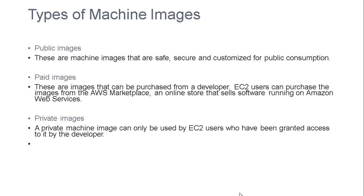Paid images are images that can be purchased from the developer. EC2 users can purchase images from the AWS Marketplace, an online store that sells software running on Amazon Web Services. Private images can only be used by EC2 users who have been granted access to them by the developer.